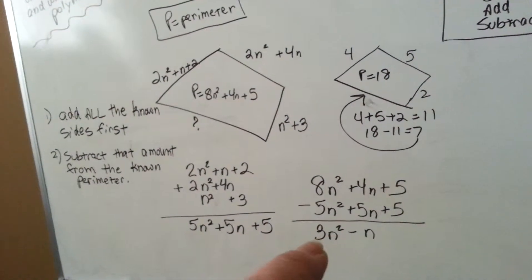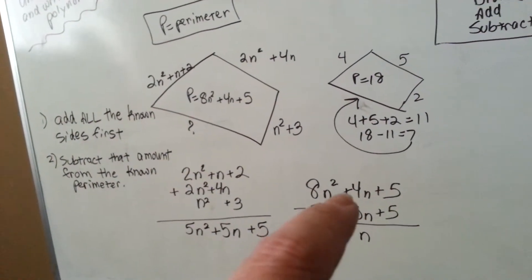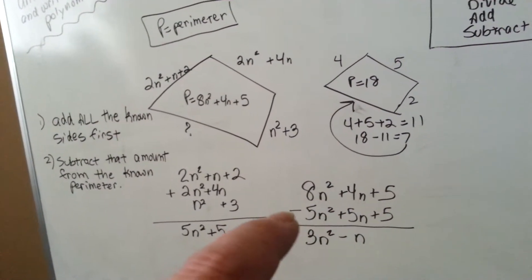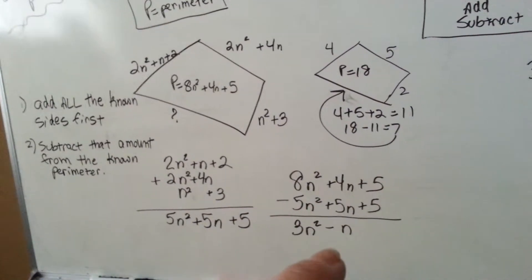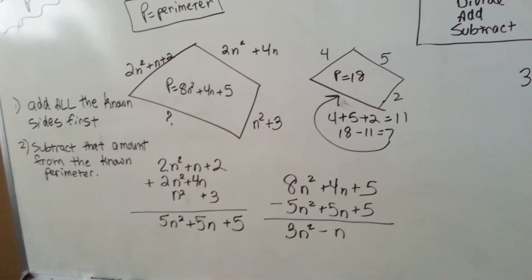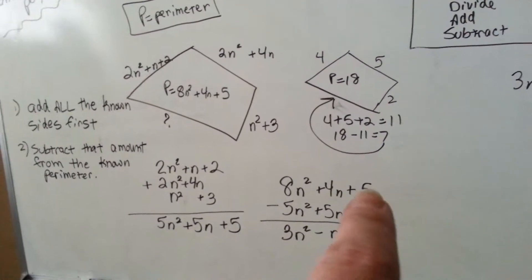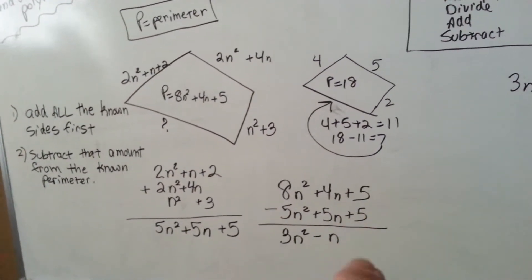8n squared take away 5n squared is 3n squared. If you've got 4 and you're going to take away - because we're subtracting - 5, you're going to get a negative 1. Remember there's an invisible one there. And if you've got 5 and you take away 5, you've got nothing.